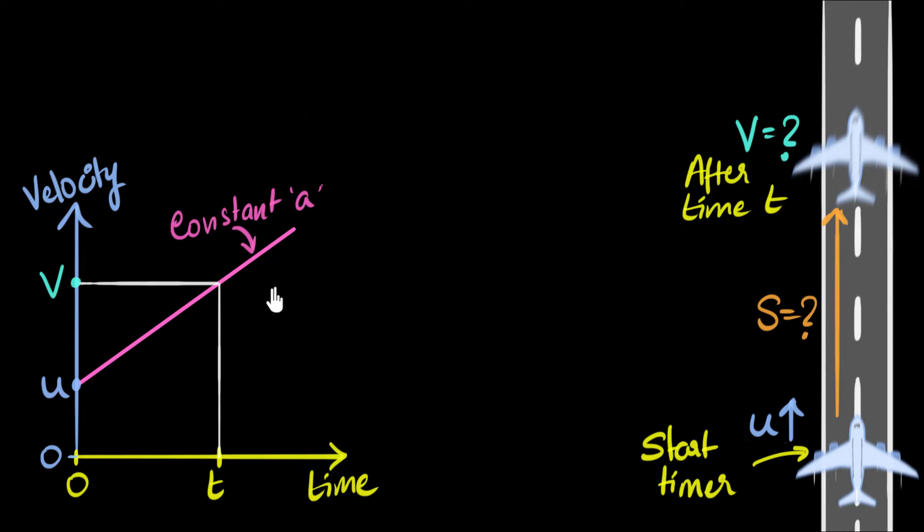But what does that mean? Well, that just means we're assuming that the velocity of our aeroplane is increasing by the same amount every second. For example, if initially over here its velocity was say 20, next second it becomes 25, then the next second it should become 30. Again increase by five. Next second it should become 35. It should always increase by five. That's what we mean by constant acceleration. So, we'll go ahead and build equations for velocity and displacement for constant accelerations.